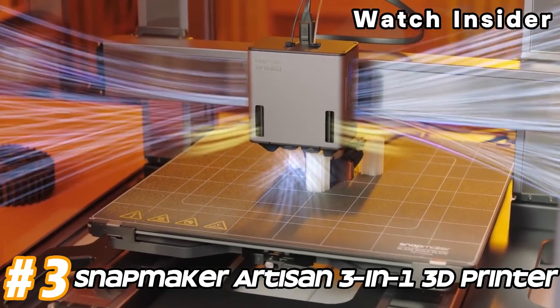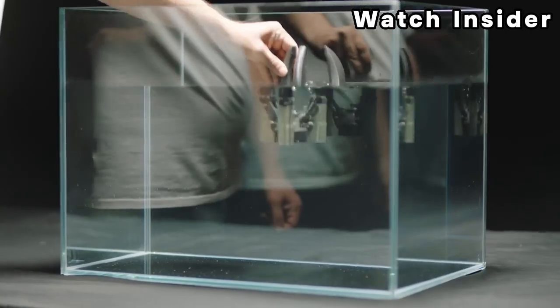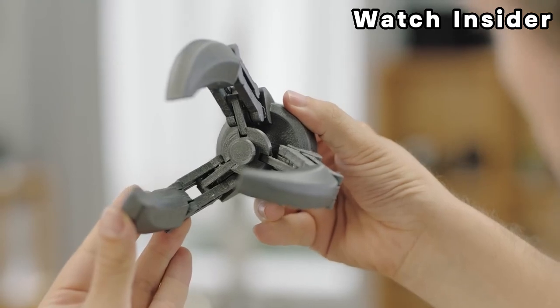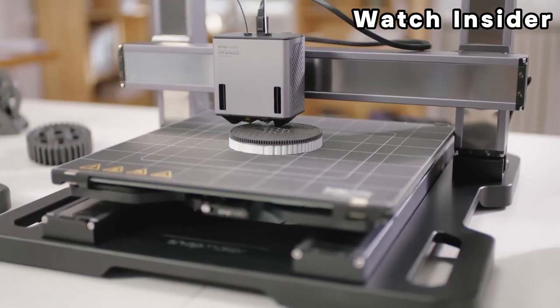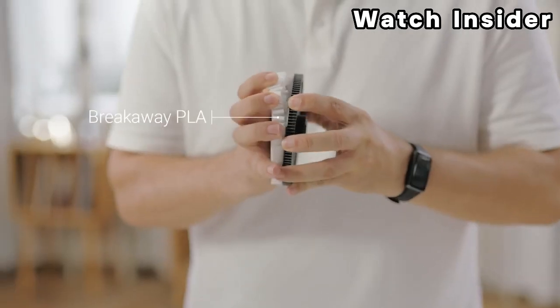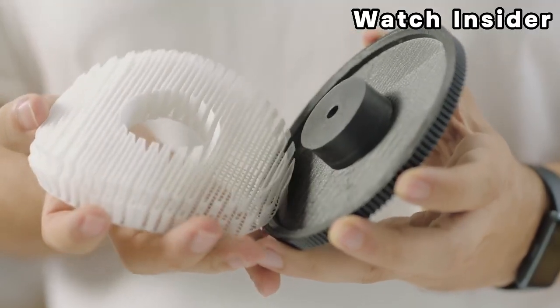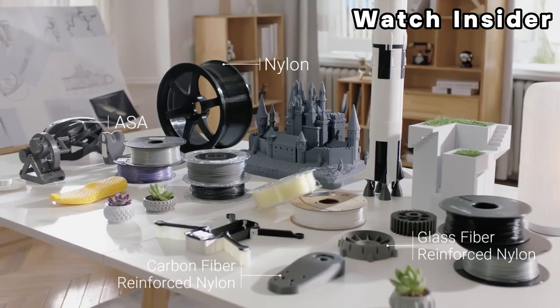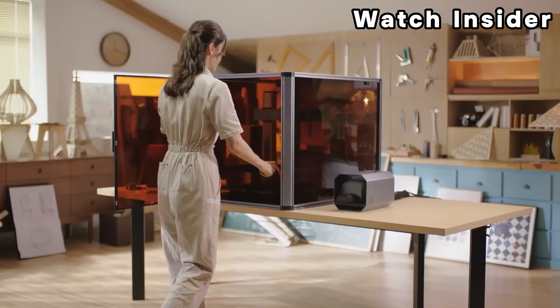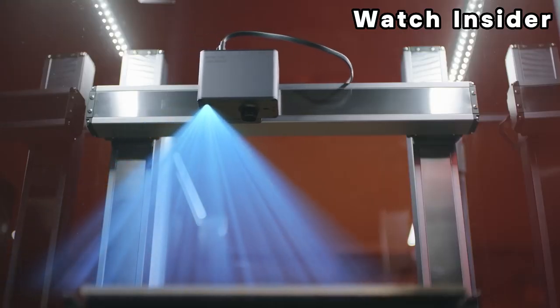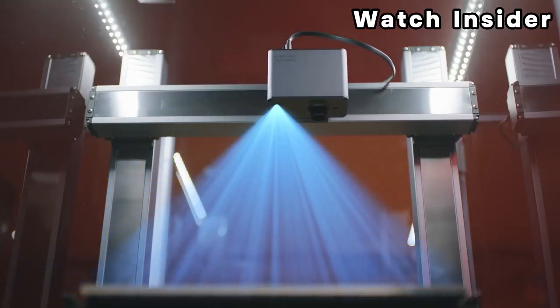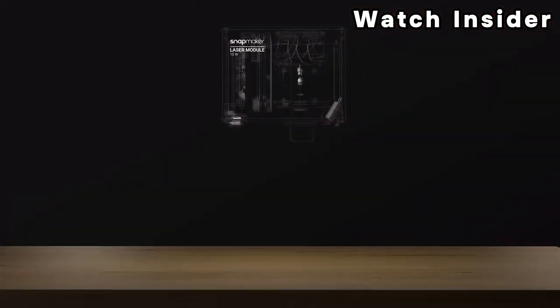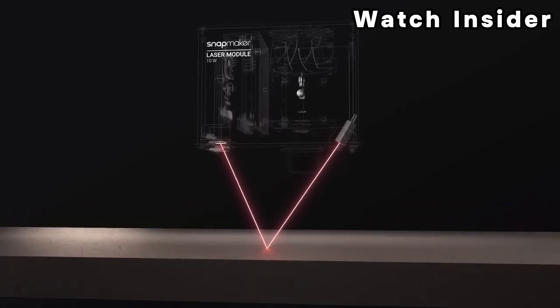Number three: Snapmaker Artisan 3-in-1 3D Printer. The Snapmaker Artisan features a modular design, allowing users to easily switch between its 3D printing and CNC carving modules. This modular approach enhances versatility and flexibility, enabling users to tackle a wide range of projects. The 3D printing module allows users to create three-dimensional objects by extruding filament layer by layer. It supports various filament materials such as PLA, ABS, PETG, and more.